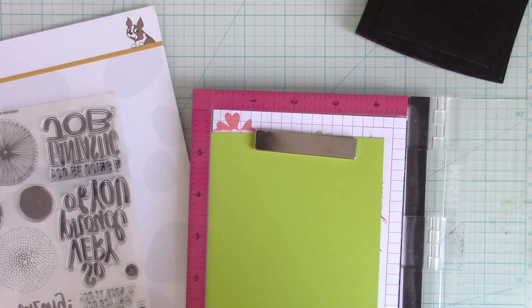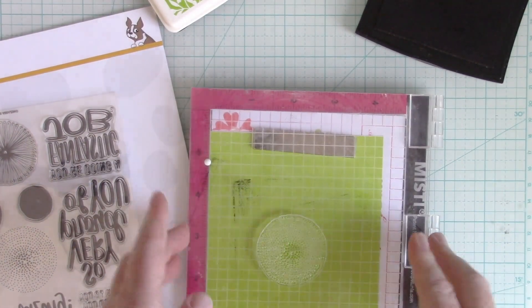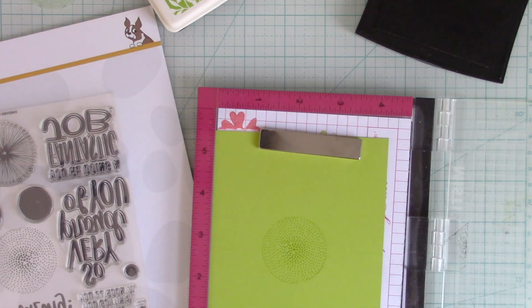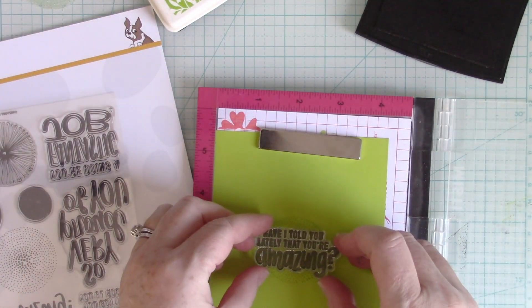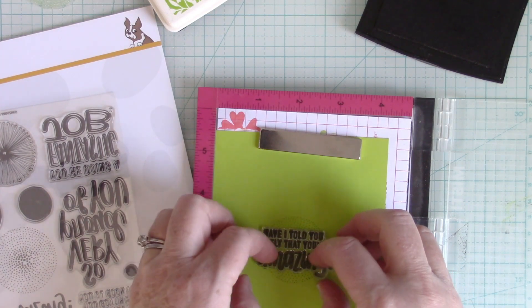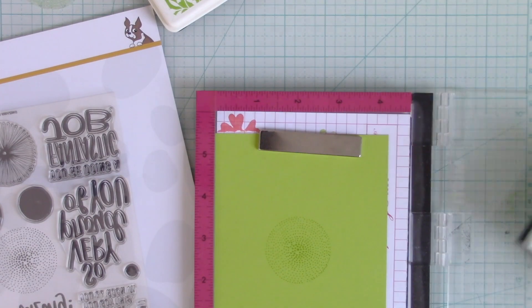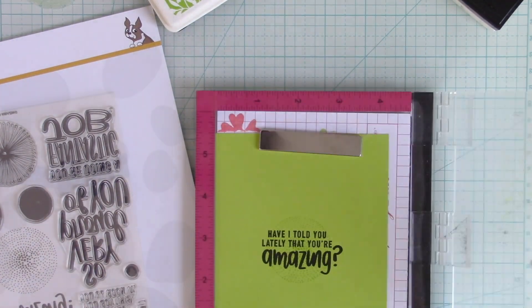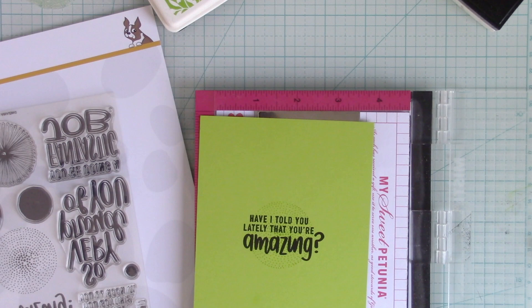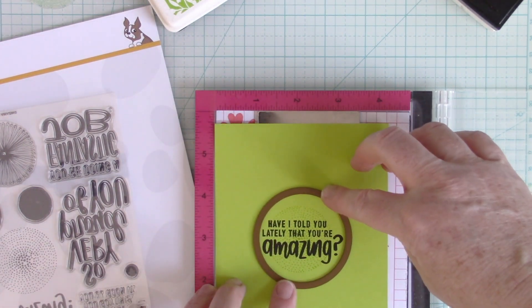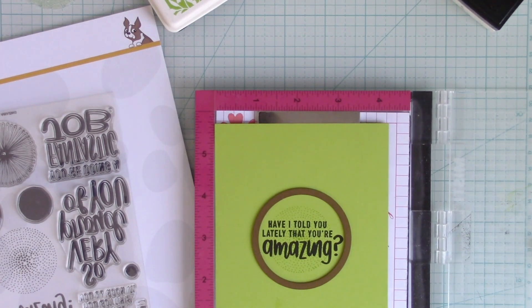I have a circular design stamp set as well as a sentiment from a Simon Says Stamp set. The sentiment says, have I told you lately that you're amazing? I'm going to be stamping this on some Gina K Designs cardstock with some black ink. I thought between the black and the pewter metallics, the Zap Attack, and this color of cardstock, it would make a nice masculine card.